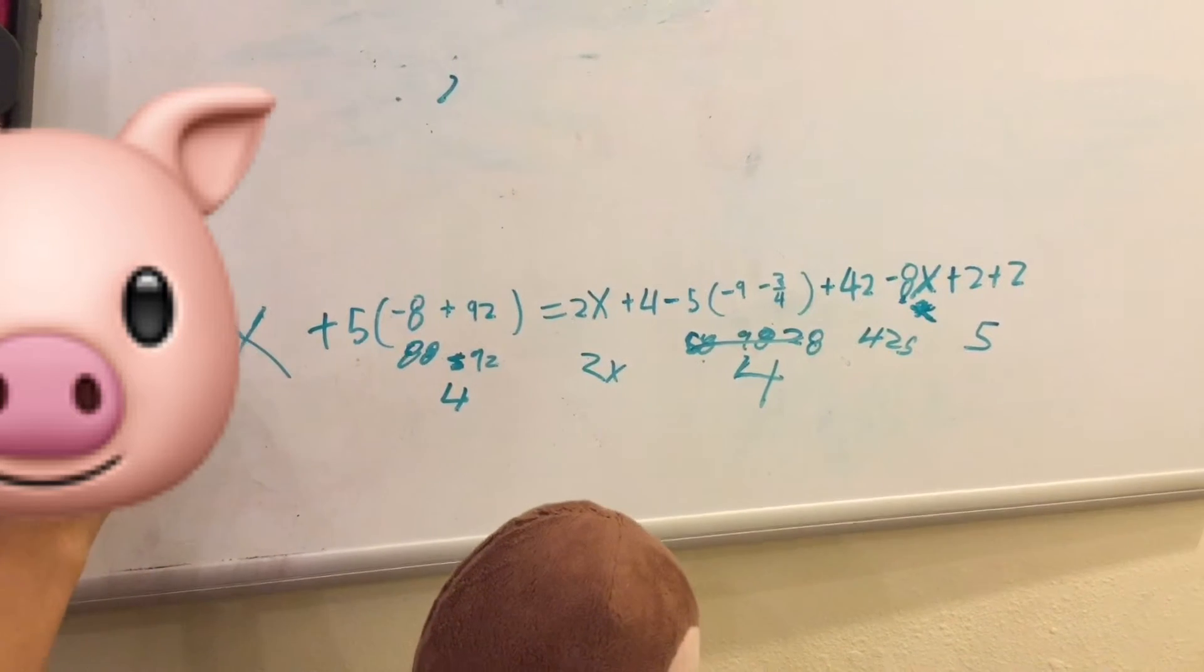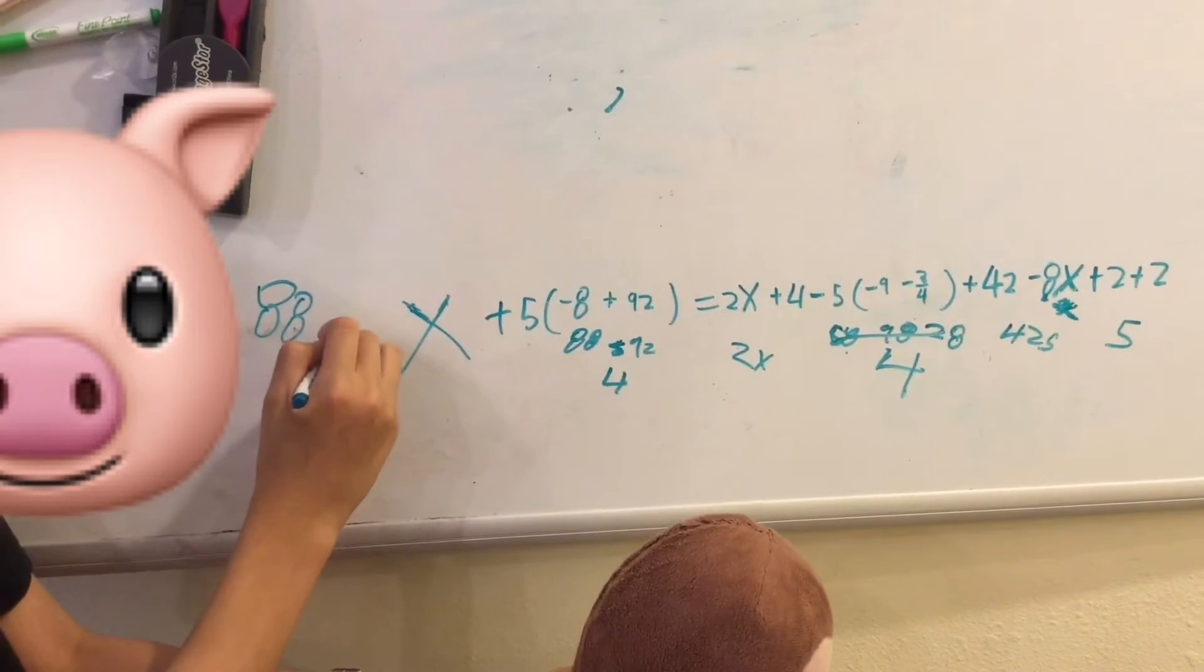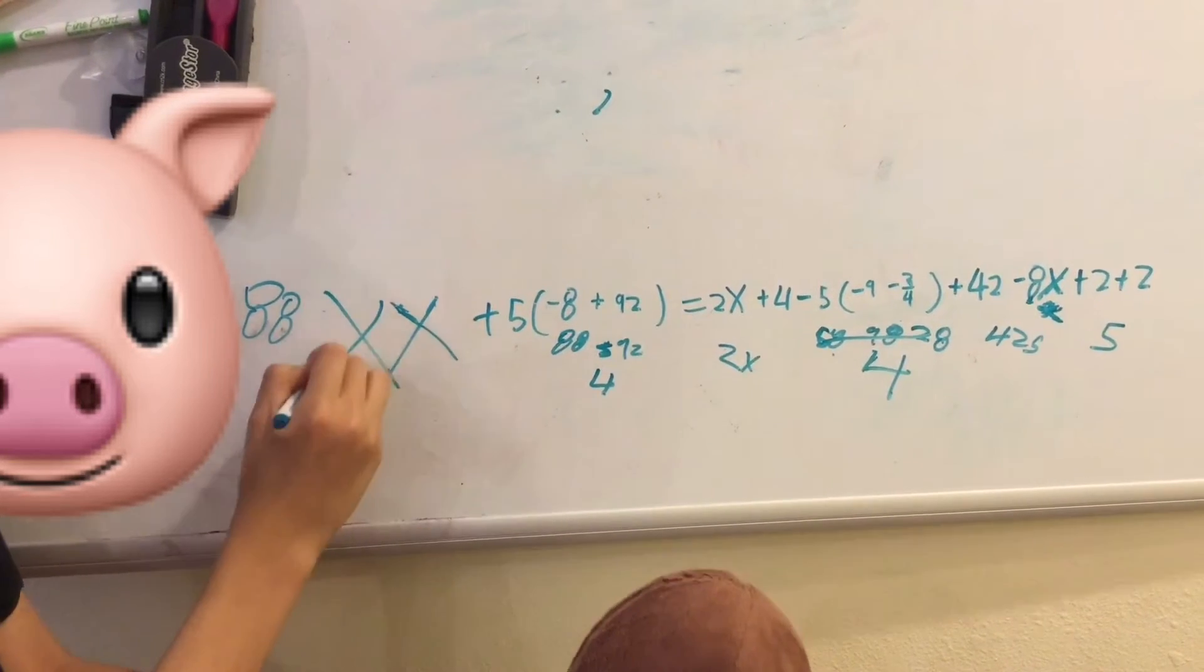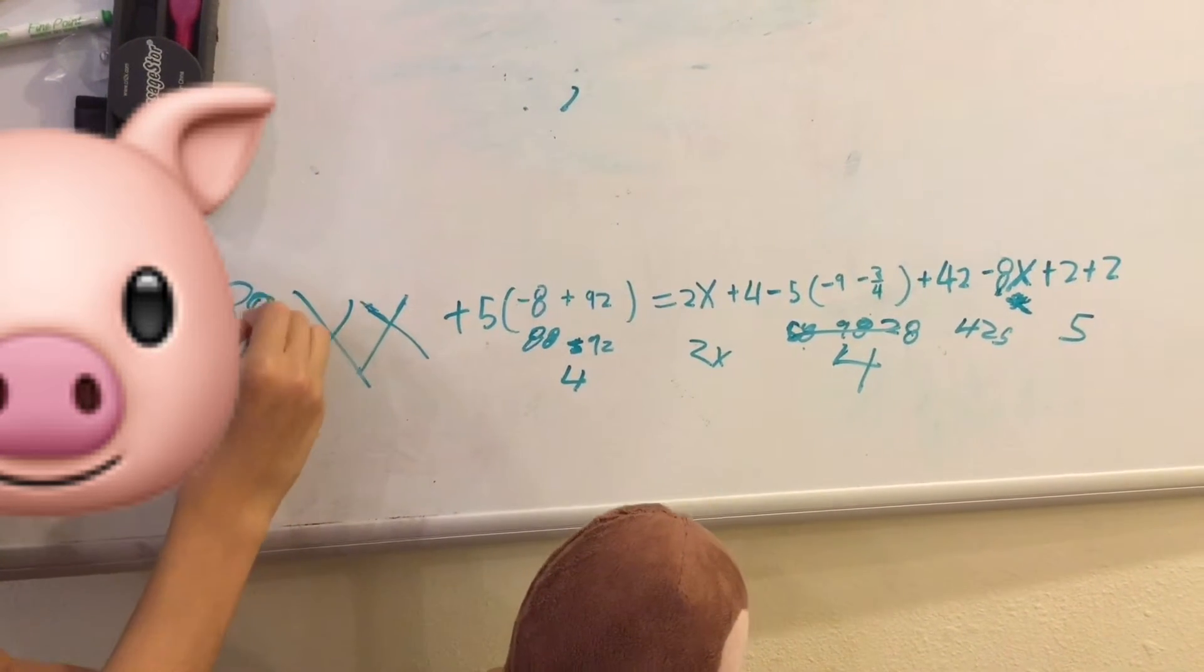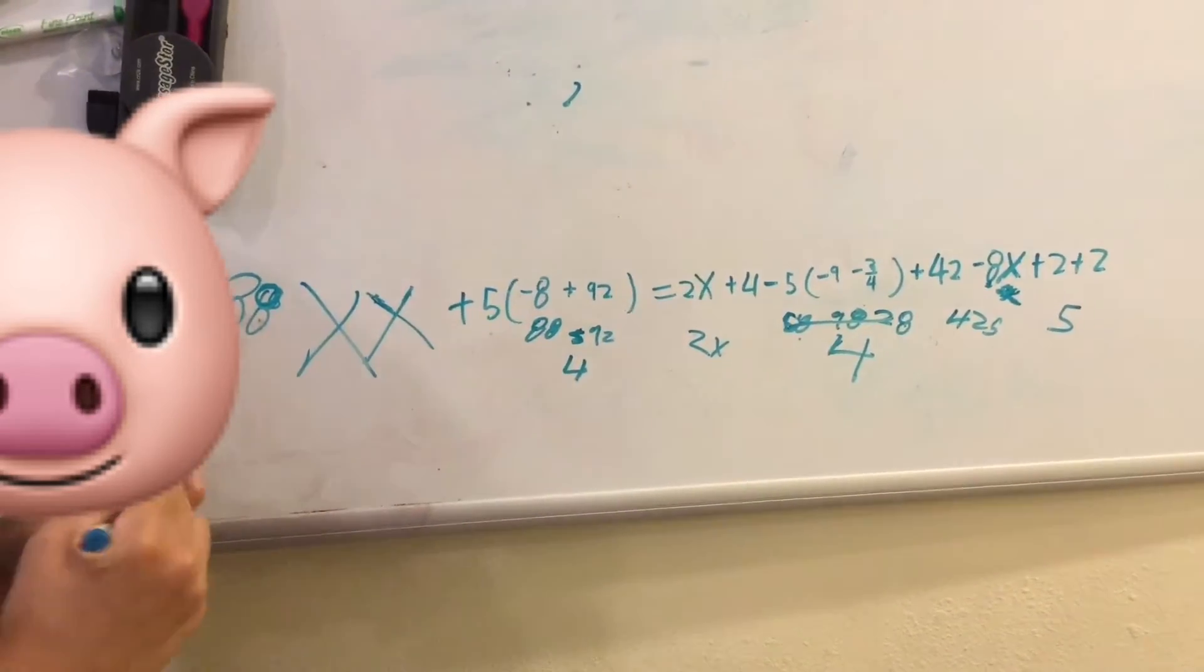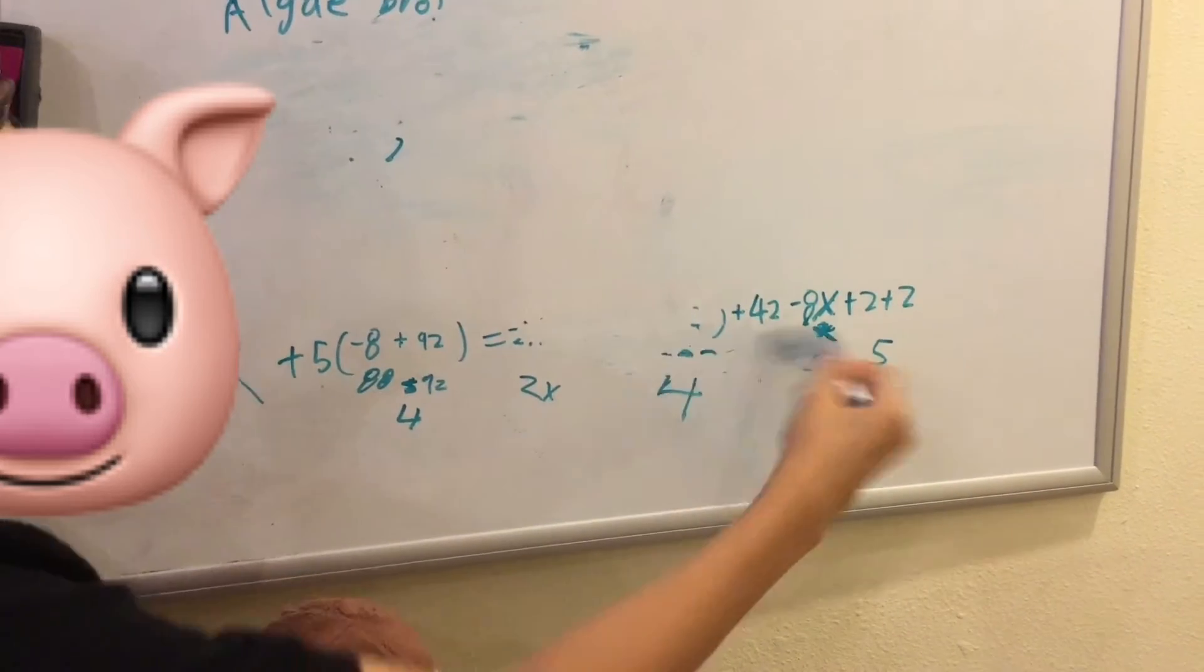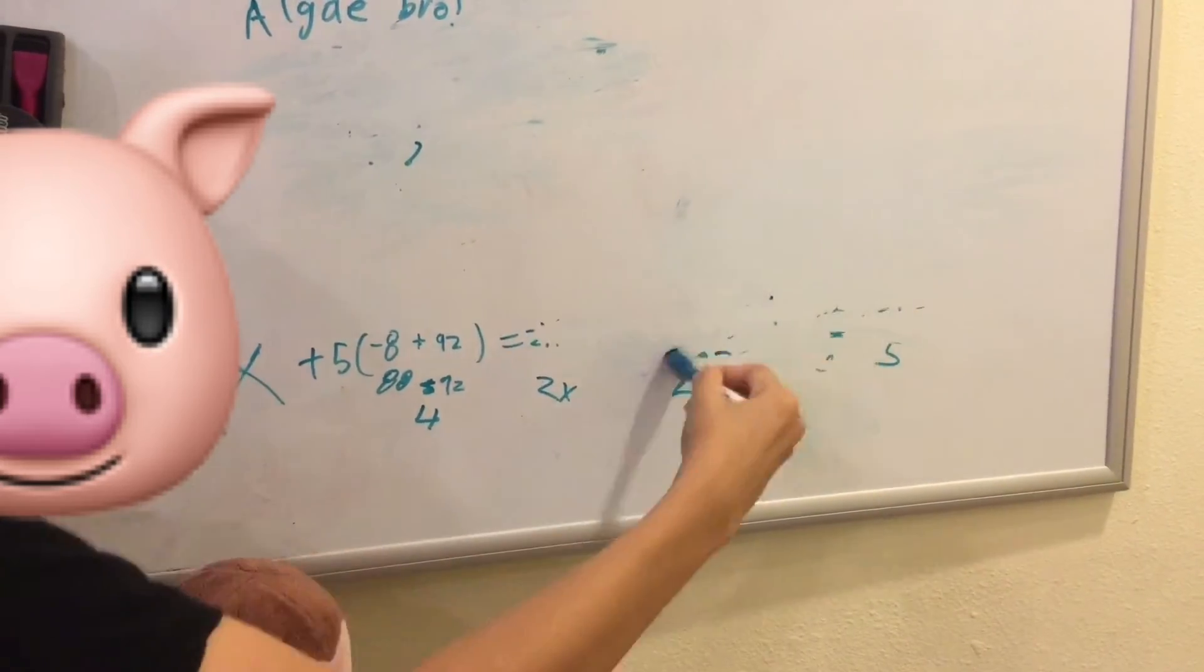So, adding it to this side. So, we get 88X. Oh, we could get, we could also get, yeah, 88XX. 88XX is what we get. So, now on this side, all we're left with is 4.